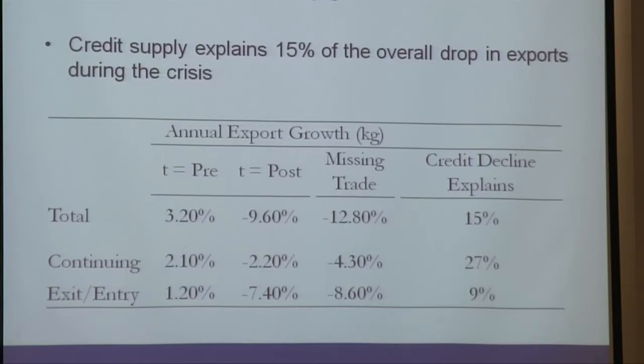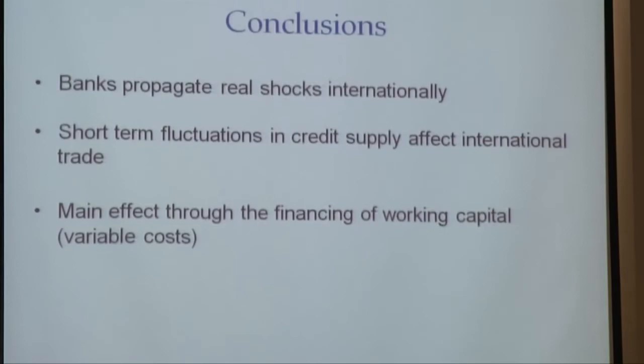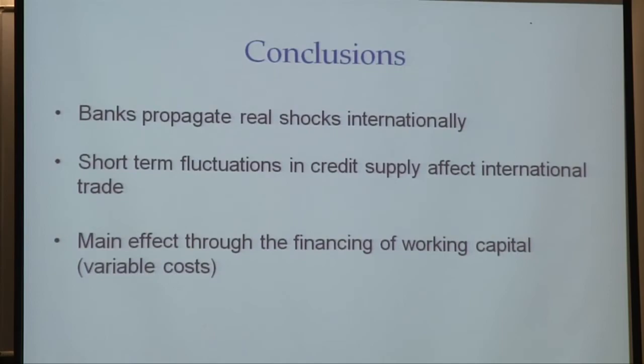To conclude: banks do propagate real shocks internationally. Banks in Peru were not exposed to real estate in the US, did not hold any subprime assets, and still had to cut their supply of credit. Short-term fluctuations in credit supply affect international trade. The effect is important in general, but explains just 15% of the overall decline — clearly the rest was due to demand factors. Finally, the effect works through working capital, which is salient because we're not used to thinking about real effects operating through working capital rather than through investment in capital goods. Thank you.